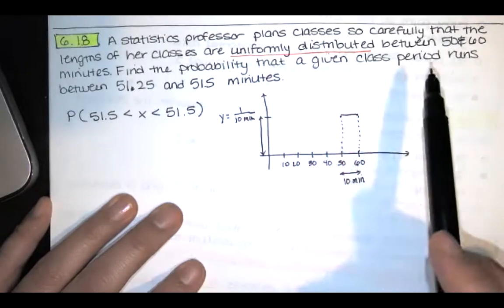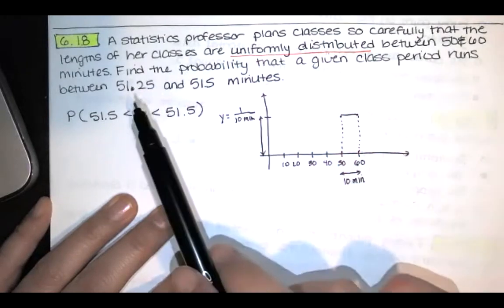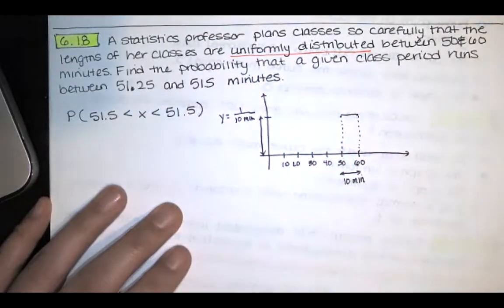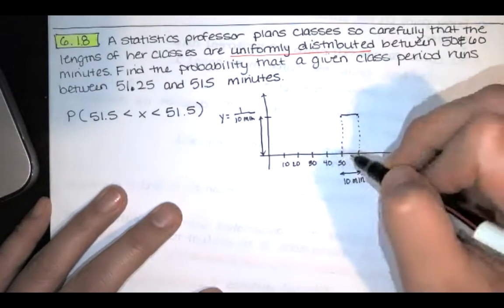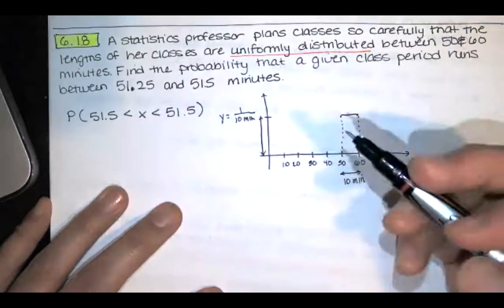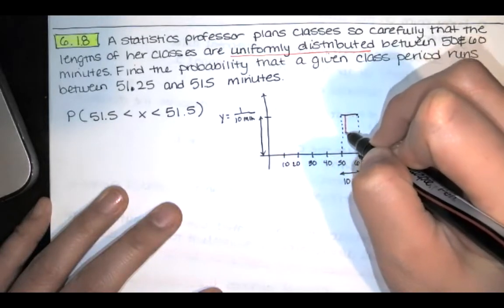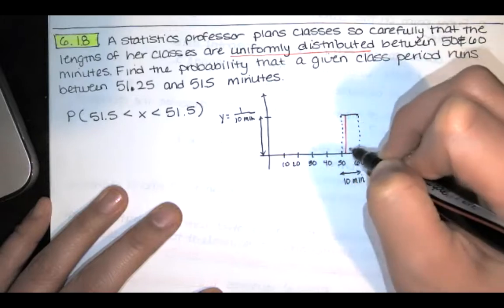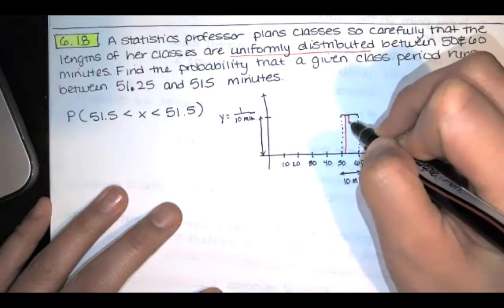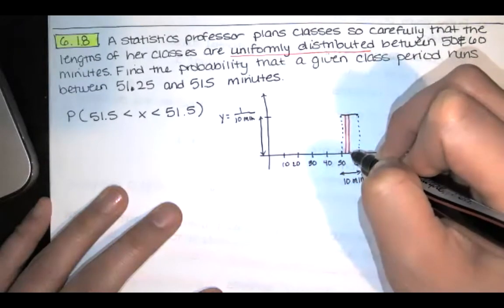And we're asked to find the probability that a given class period runs between 51.25 and 51.5 minutes. So about 51 minutes, close to that 51 minute mark. So we're going to start at 51.25 minutes and we'll go to 51.5 minutes.